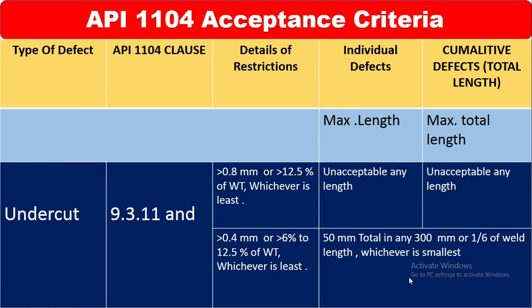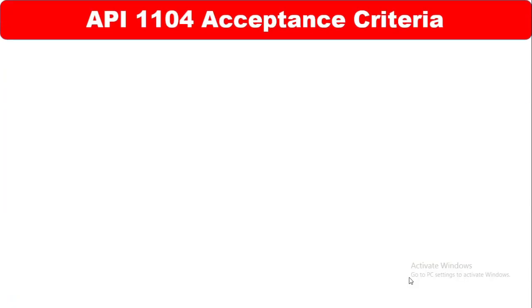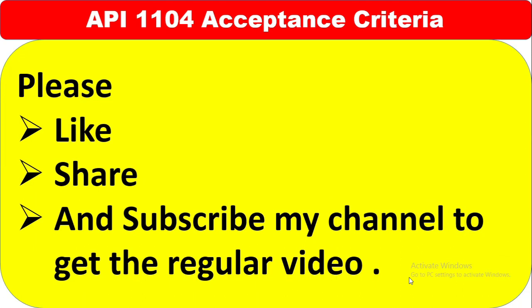This is the undercut acceptance criteria clearly found in clause 9.3.11. I think this is a short but very important video covering all these defect acceptance criteria in one place. Thanks a lot — please like, share, and subscribe to my channel to get regular videos. Thank you.